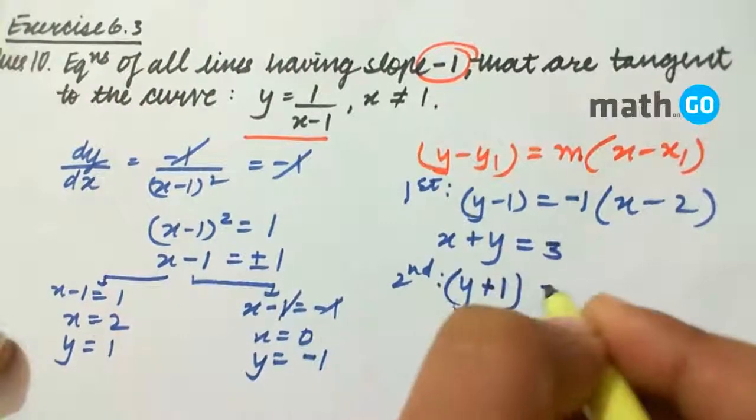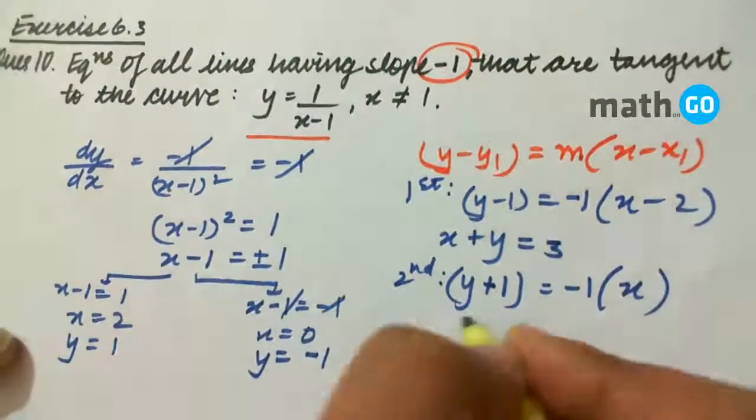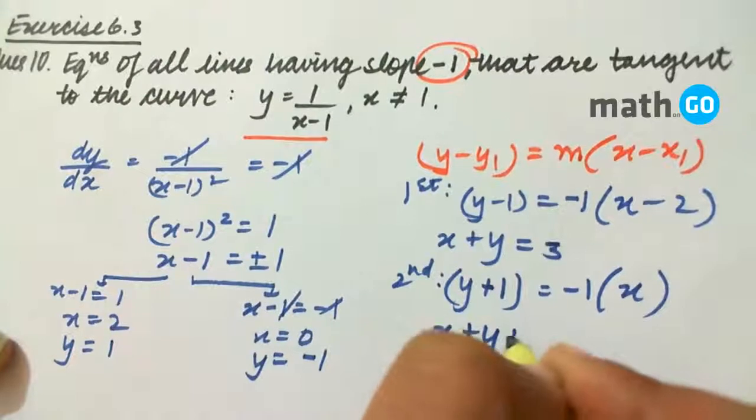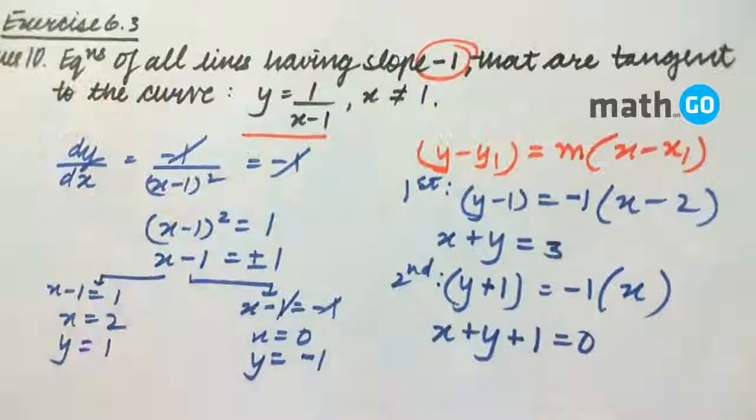So y + 1 = -1(x - 0), giving us the equation x + y + 1 = 0. So these are the equations.